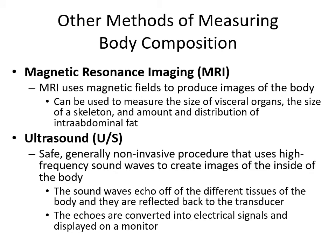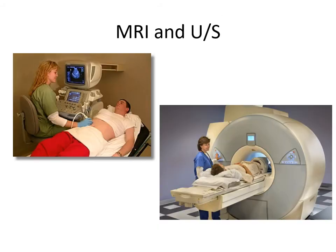Emerging methods include MRI, which uses magnetic fields to produce images and can measure the size of visceral organs, the skeleton, or the distribution of intra-abdominal fat. Ultrasound is safe, generally non-invasive, and uses high-frequency sound waves to create images; echoes from different tissues are converted into electrical signals on a monitor, allowing measurement of muscle thickness and fat thickness. These technologies are relatively new for body composition but are expected to provide additional information in the future.